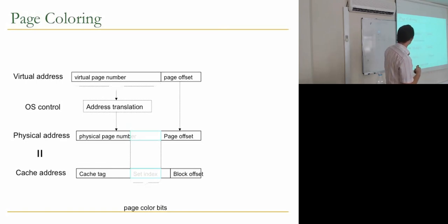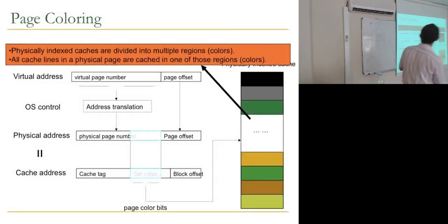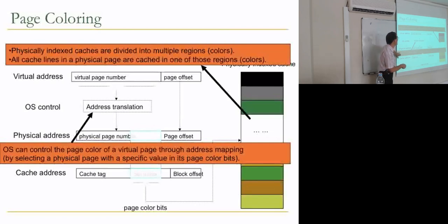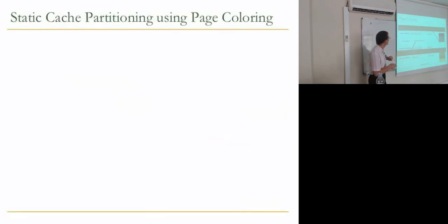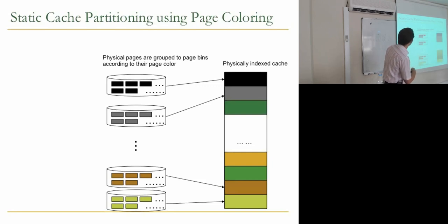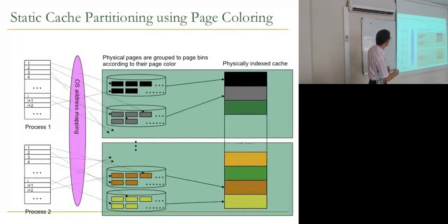It's a beautiful mechanism — you've now partitioned your cache. OS controls this through address mapping: all cache lines in a physical page are cached in one color region. The OS selects a physical page with a specific value in its page color bits to control the page color of a virtual page. For static partitioning, group physical pages into bins by page color, and assign specific colors to each process so their pages map to separate cache regions.